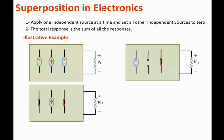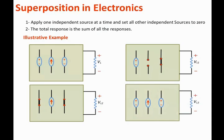Finally, we apply the third source, which is a voltage source, and kill the first two — the voltage source becomes a short circuit and the current source becomes an open circuit. We solve for the response caused by the third voltage source and call it VL3. The total response of the circuit is then VL equals VL1 plus VL2 plus VL3.